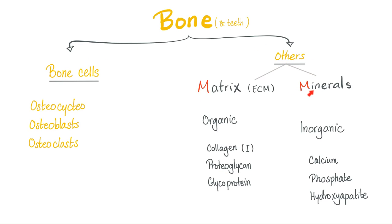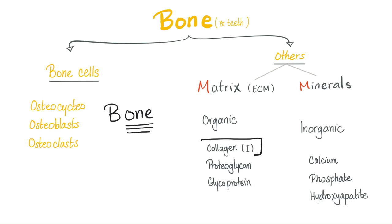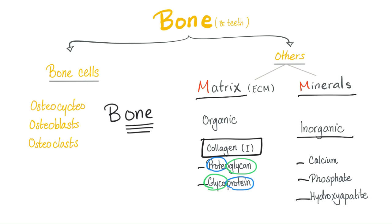Bone is made of matrix and minerals — M and M. The matrix is organic: collagen type 1 in bone (type 2 in cartilage, but type 1 in bone). There's also a mnemonic: you write 'bone' and even bone contains the number 1 — type 1 collagen. Plus proteoglycans and glycoproteins. The inorganic component is the minerals: calcium phosphate and hydroxyapatite, which is basic calcium phosphate.